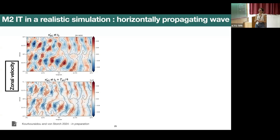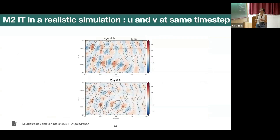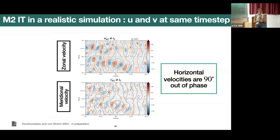Here I show an interesting feature of the internal tide in the simulation: the horizontally propagating wave. Above we have the M2 zonal velocity at the first time step with contours; below, the same thing a quarter period later. The contour lines that lie on top of zero velocities then lie on top of the velocity maxima, indicating propagation. Looking at both zonal and meridional velocity at the same time step, we see that the meridional and zonal velocity are 90 degrees out of phase from each other.